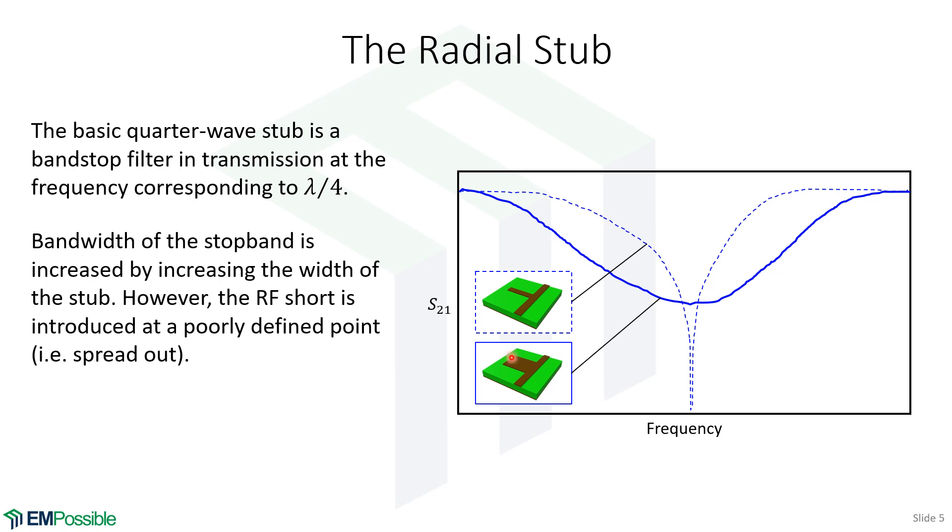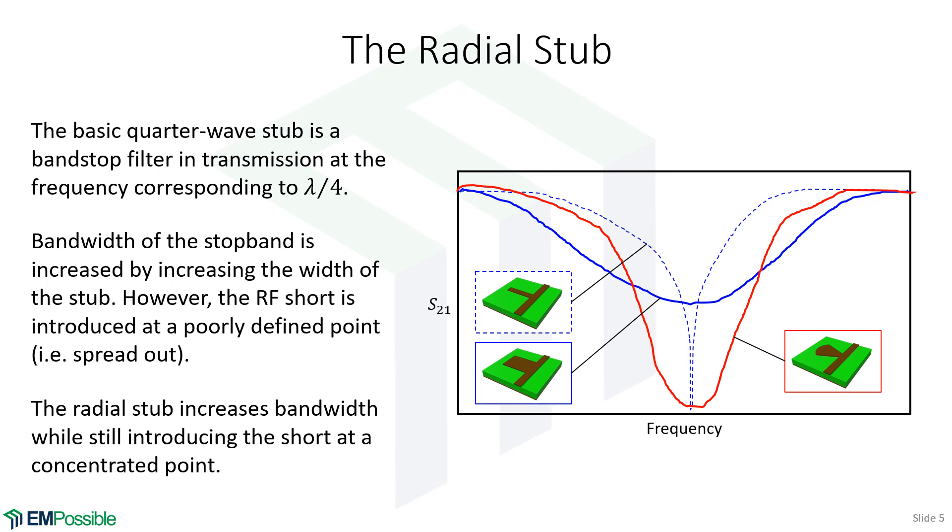Well, what can we do? Well, how about we keep the stub wide at the end to try to maintain bandwidth, but make it skinny at the bottom, so it's a localized point on the transmission line where that effective short circuit occurs. And, of course, that is the radial stub. So it's a way of increasing the bandwidth of the performance of a normal stub while not blurring and weakening that resonance. And that's a radial stub.